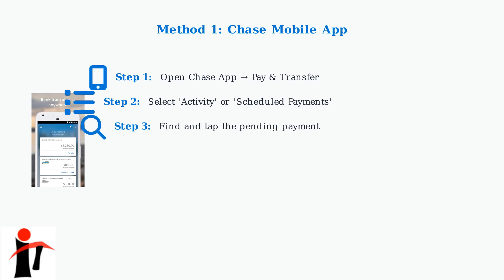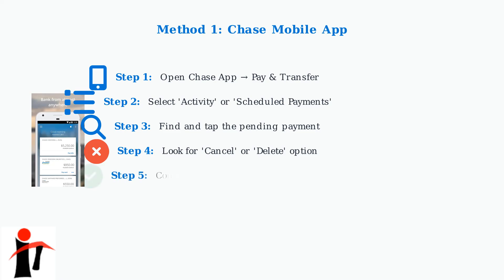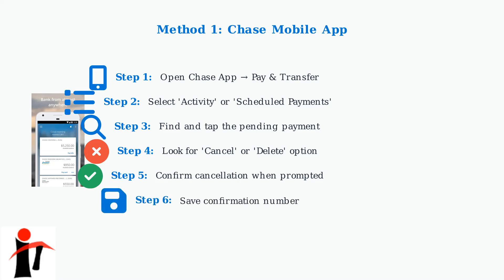Step 3: Locate the specific pending payment you want to cancel and tap on it to view its detailed information. Step 4: Look for a Cancel or Delete option — this button will only appear if the payment is eligible for cancellation. Step 5: Tap the Cancel option and confirm the cancellation when prompted; the app will ask you to verify that you want to cancel. Step 6: Save the confirmation number for your records, as it serves as proof that you successfully canceled the payment.